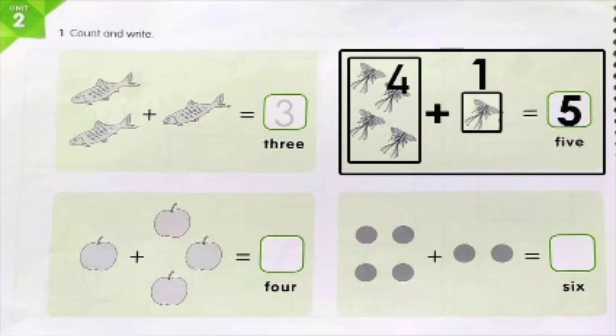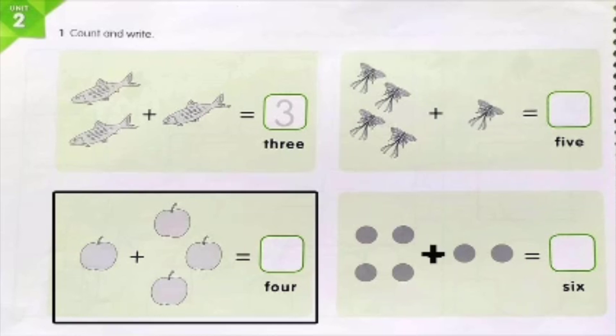When we add four butterflies and one butterfly we get five butterflies. You have to write number five in the given box.